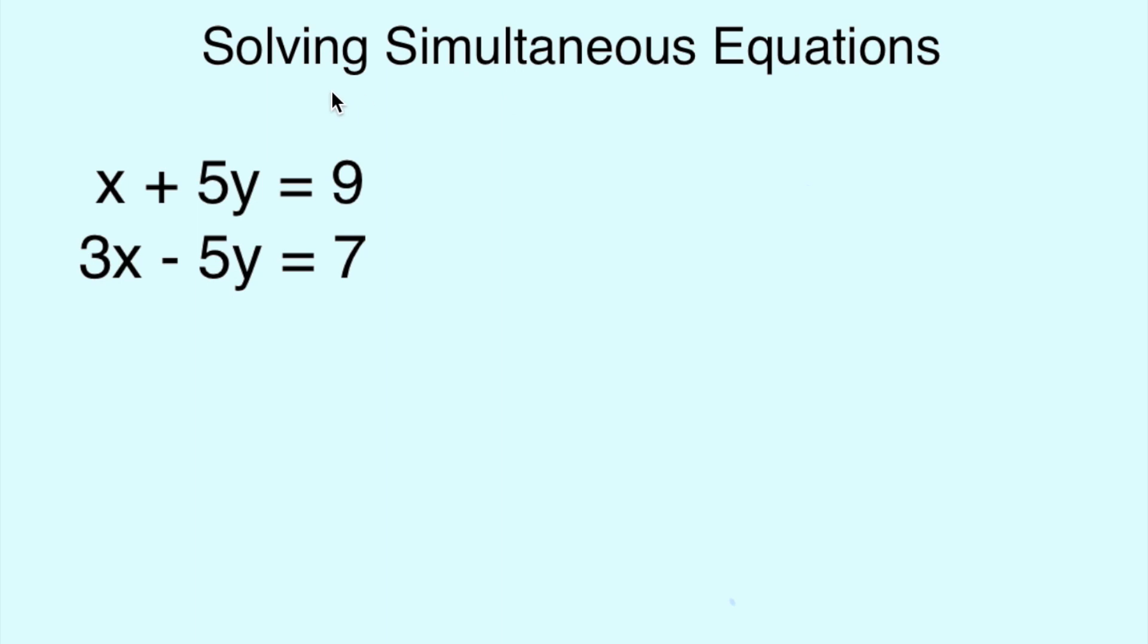Now, we use that if the terms have the same sign in front of them. However, in this example, you can see that plus 5y and minus 5y have two different signs. So, the rule to remember on this round is alternate sign add. Now, what does that mean? It's exactly the same as the last, only this time we're going to add the bottom to the top.